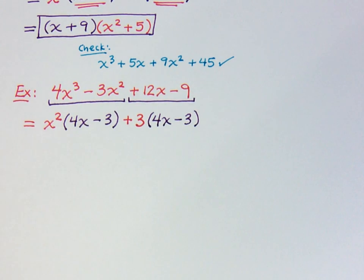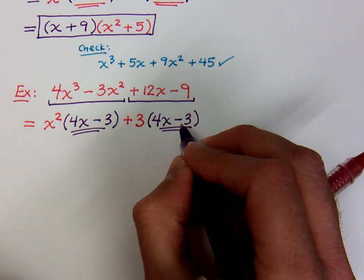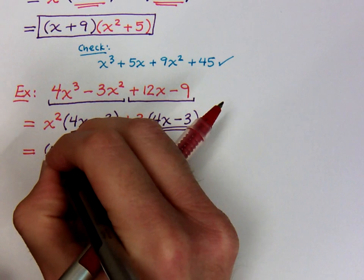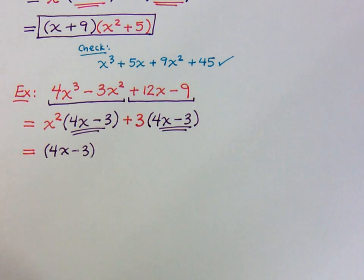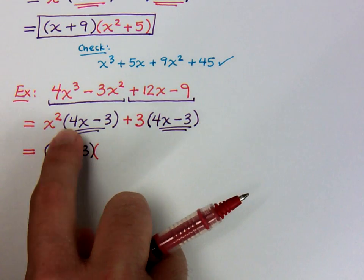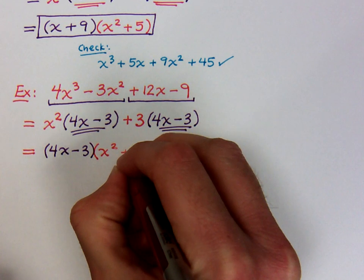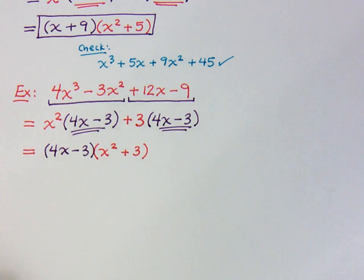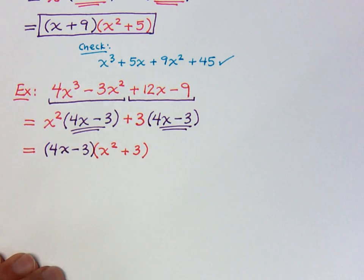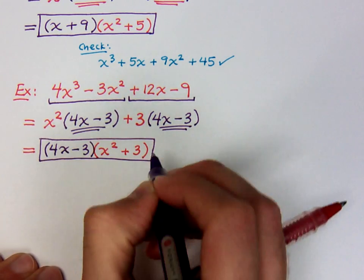If I factor out the 3, there's the 4x, and negative 9 divided by 3 is a minus 3. Do you see how we can finish factoring this by grouping? These factors right here are exactly the same. That is my large common factor that comes up front — 4x minus 3. And then you see what is left over. I took out the 4x minus 3, and I'm left with x squared plus 3. There's nothing else these guys have in common, so we're done.